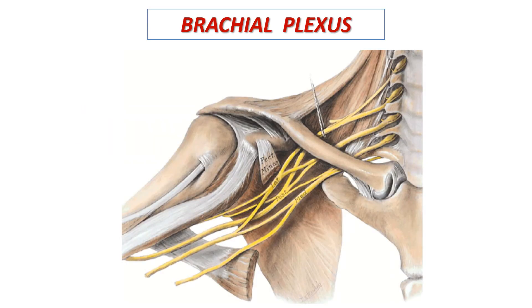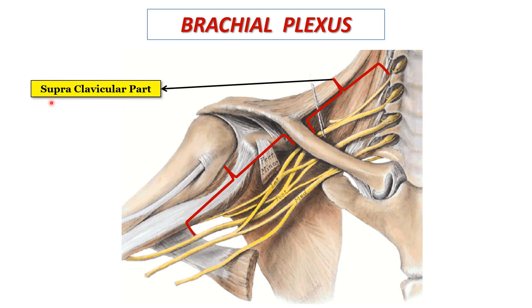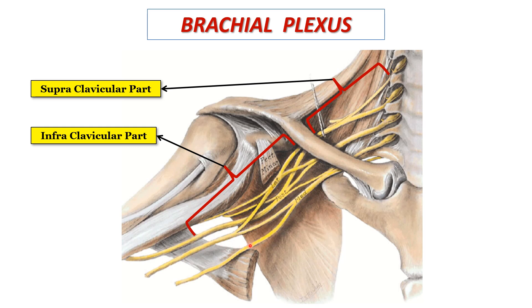Welcome to this video tutorial on the formation and branches of the brachial plexus. The brachial plexus is a nerve plexus formed by cervical spinal nerves. In relation to the clavicle, it is divided into two parts: the upper supraclavicular part and the lower infraclavicular part. The supraclavicular part is located in the posterior triangle of the neck region, whereas the infraclavicular part enters into the axilla.